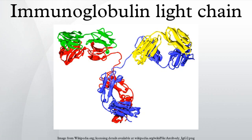Camelids are unique among mammals as they also have fully functional antibodies which have two heavy chains but lack the light chains usually paired with each heavy chain. The functional role of this separate repertoire is unknown as yet.